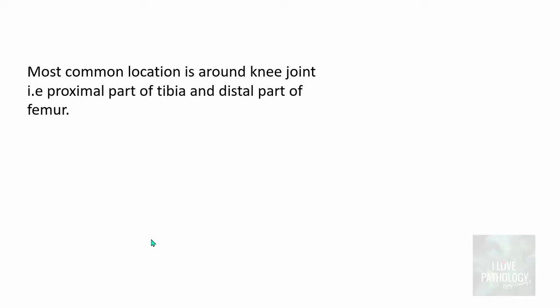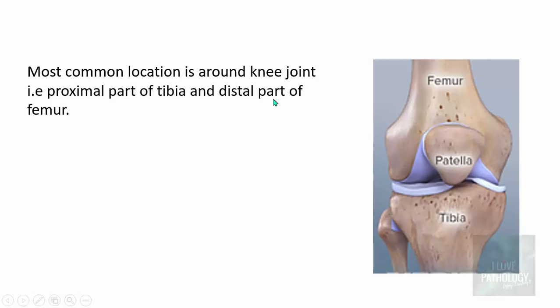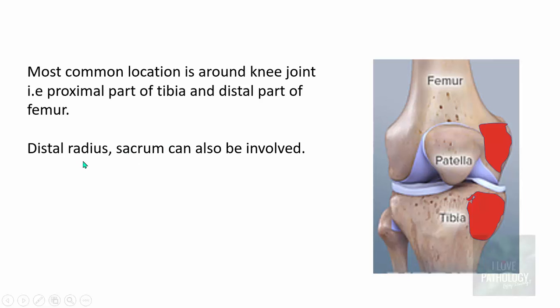The most common location of Giant cell tumor of bone is in and around the knee joint — that's the proximal part of tibia and the distal part of femur. You can see this illustration: the distal part of femur and the proximal part of tibia are the two most commonly affected sites. Of course, distal radius and sacrum can also be involved.